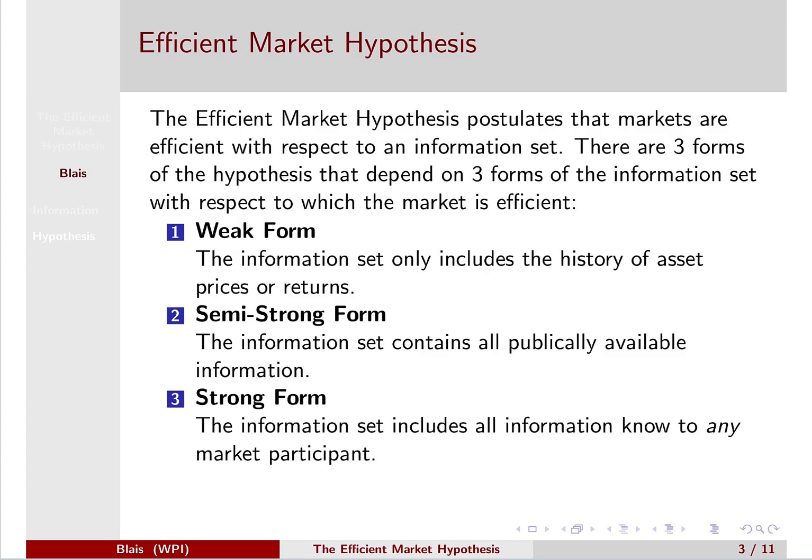But there are certainly markets where people wouldn't believe any of this. For instance, cryptocurrencies. People may believe the weak form but not the semi-strong form, because there's a lot of information out there that isn't priced in — it's a new, somewhat unpredictable market. The idea is to be familiar with these different versions of the efficient market hypothesis, because this is really standard jargon in the finance world.